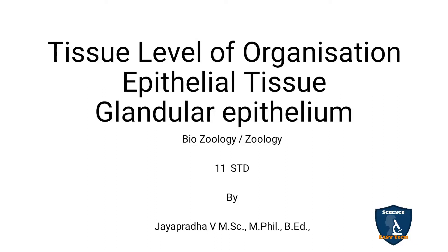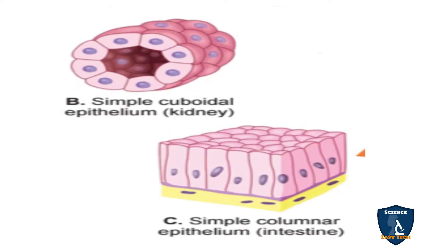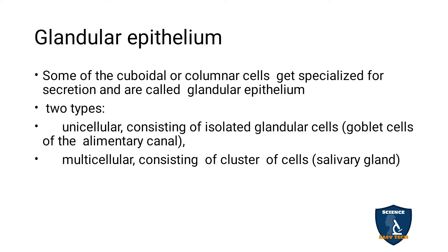The topic is glandular epithelium in epithelial tissue. Some cuboidal or columnar cells get specialized for secretion and are called glandular epithelium. These cuboidal and columnar cells got specialized to secrete substances, and such cells are called glandular epithelial tissue or glandular epithelium.